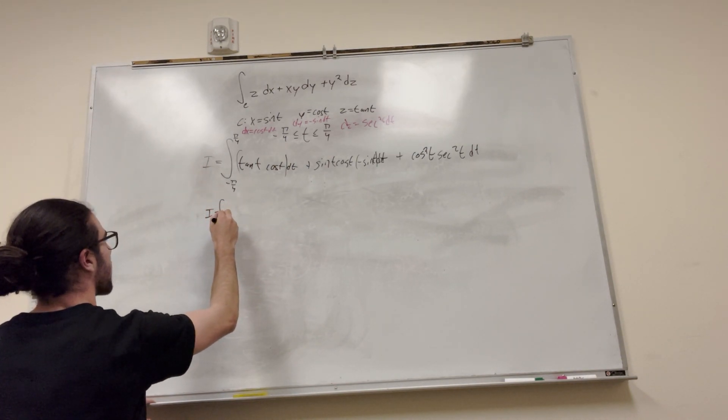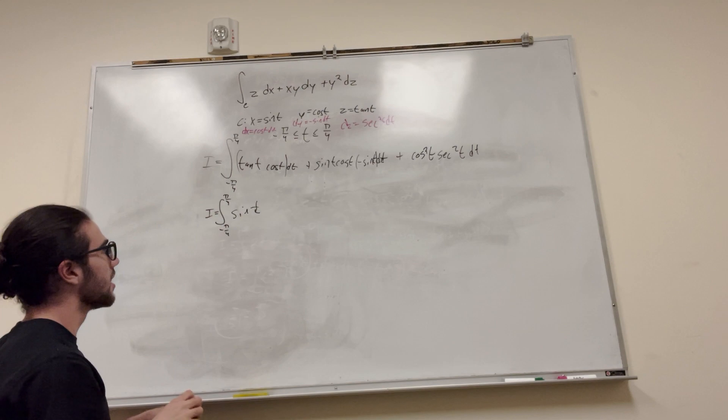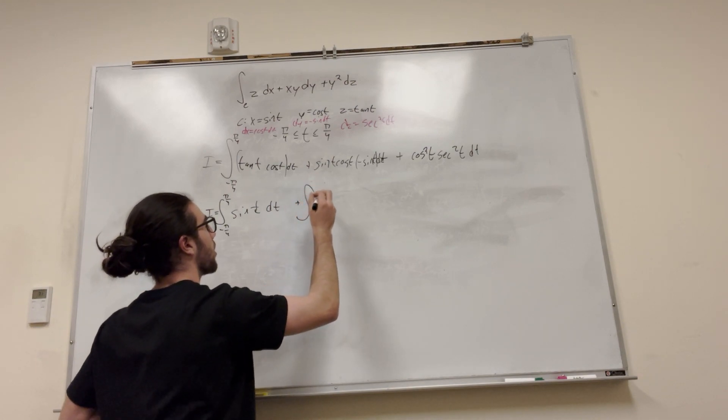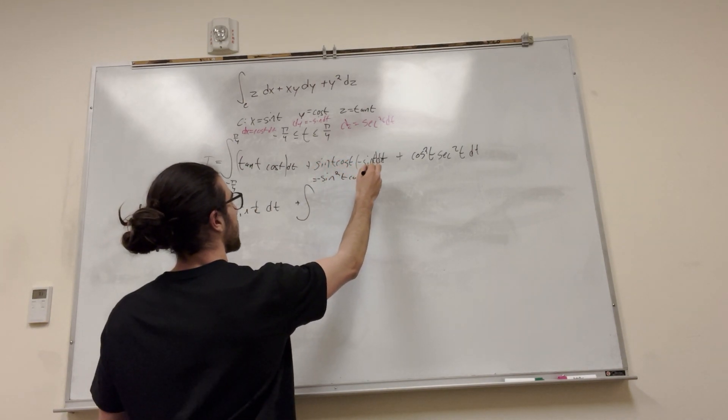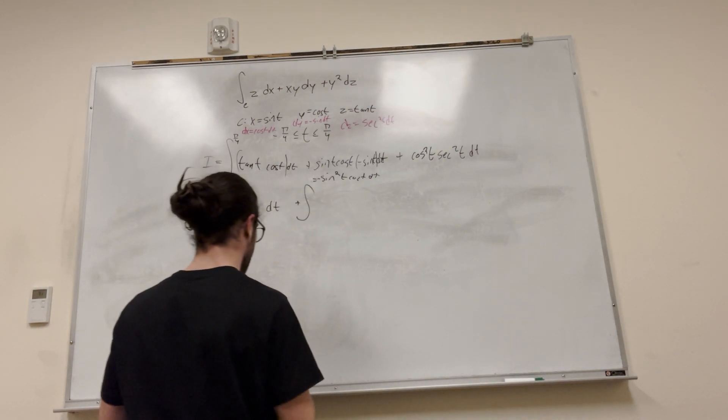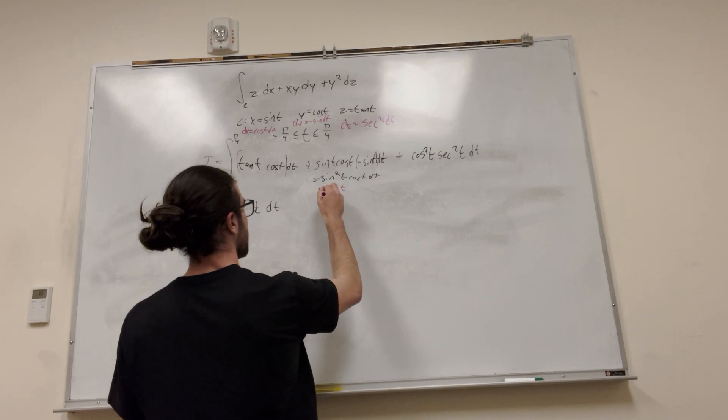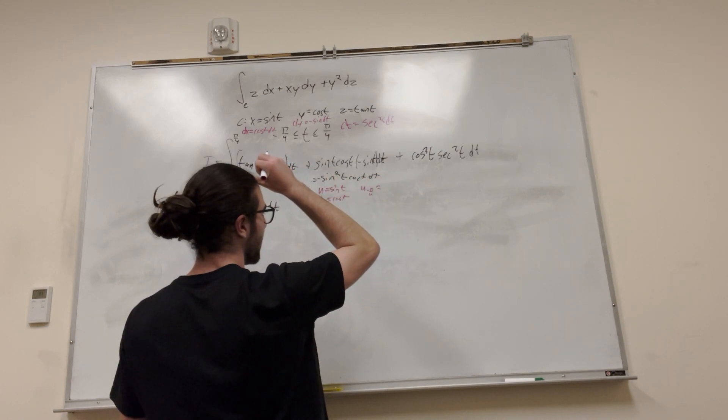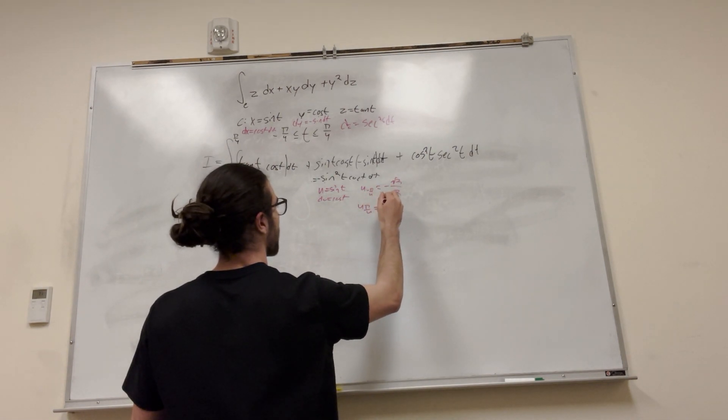All right. So I is equal to negative pi over 4, pi over 4. So sine of t. I like to split up my u sub integrals. So this is dt. Let's make a u sub out of this. We know that this is going to equal to negative sine squared of t cosine of t dt. So let's make a u sub. This is going to look a little wonky, but it's going to be all right. So u is equal to sine of t, du is equal to cosine of t. u of negative pi over 4 is going to be equal to negative radical 2 over 2. u of pi over 4 is going to be equal to radical 2 over 2.